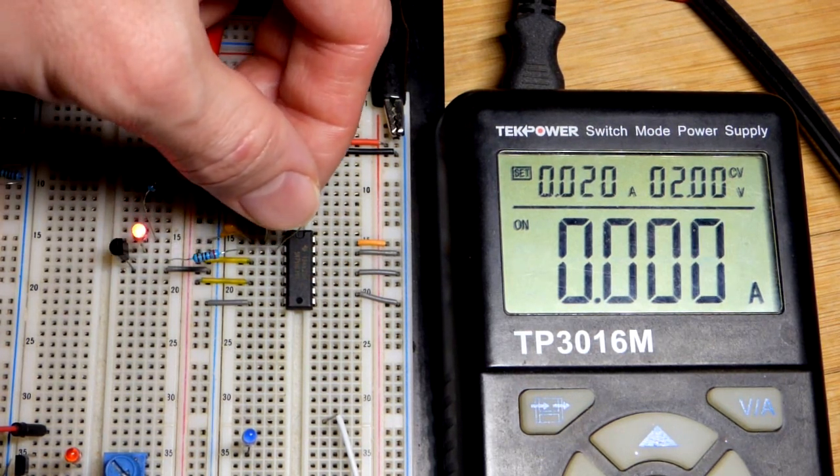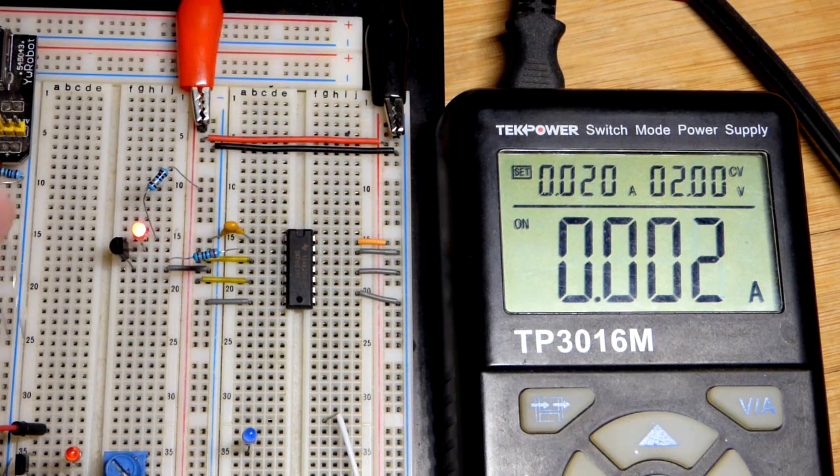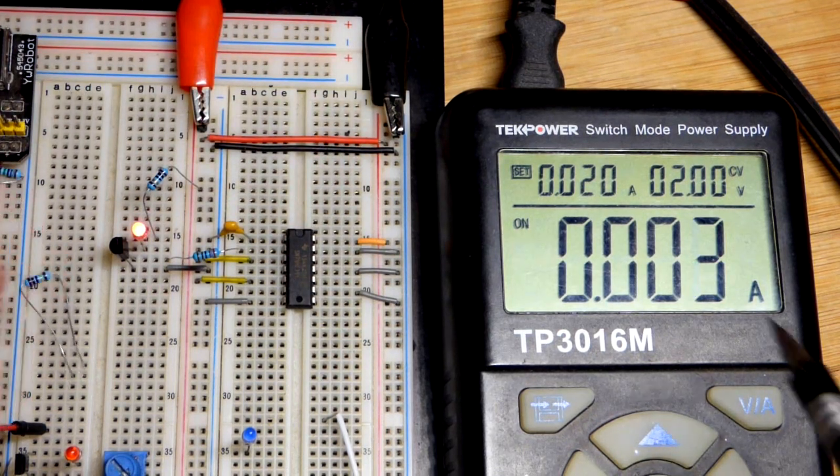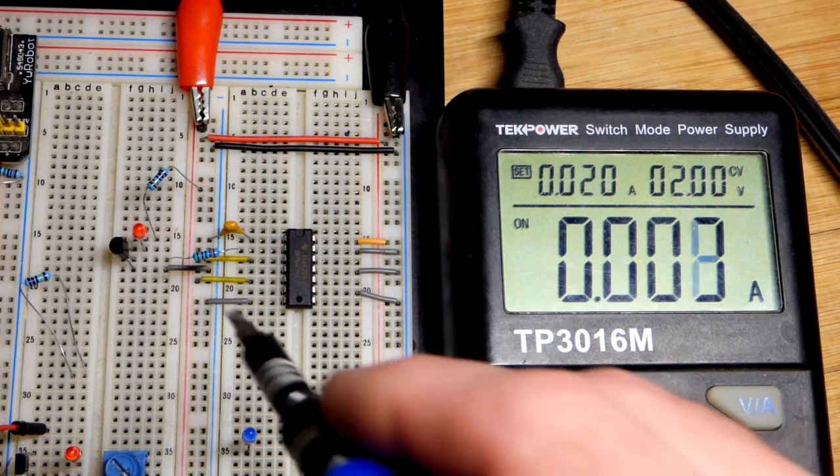When I yank the timing resistor, I'll try to get it right when the LED turns on. You're going to see that it looks like we got 3 milliamps of current at the output.